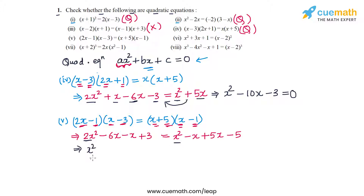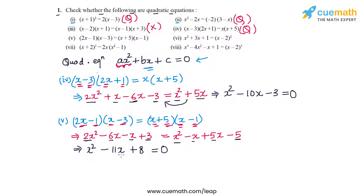Bringing 4x to the left side gives −7x − 4x = −11x. The constants are 3 on the left and −5 on the right; shifting −5 to the left gives +8. So the equation becomes x² − 11x + 8 = 0, which is a quadratic equation.